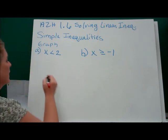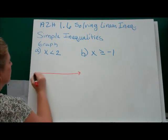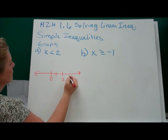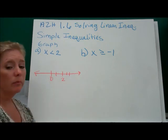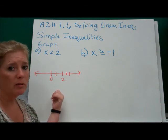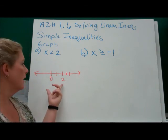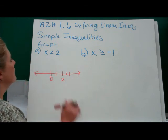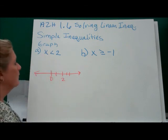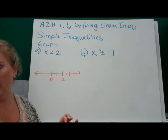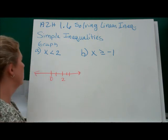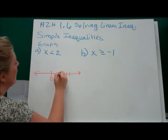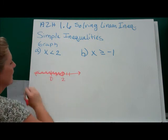This just says that x is less than 2. So if we draw a number line and put a couple of numbers on it — zero should always be on it, and then whatever numbers are your reference numbers. This one's just a less than, therefore it does not include number 2. So we're going to draw a circle on number 2 and then shade the region less than that.